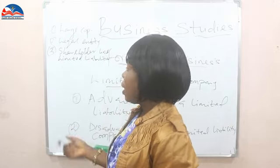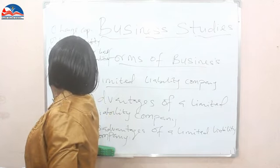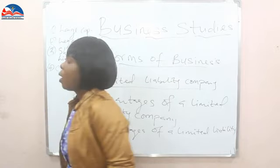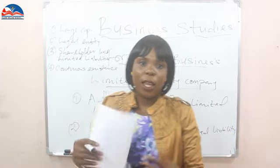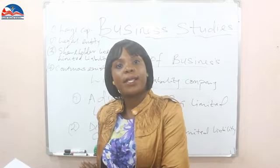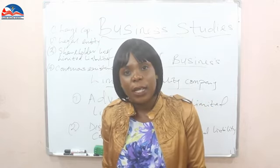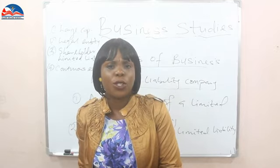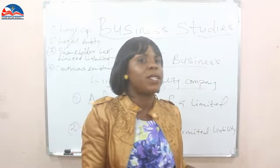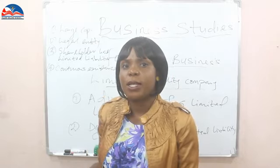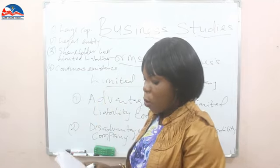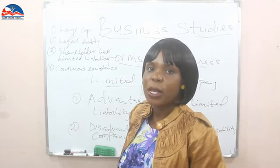Number four advantage: continuous existence. If one person dies or one person leaves the company, their share is transferred to another person or inherited by their children — it doesn't bring the business to an end. Unlike sole proprietorship or some partnerships, where if the owner dies the business dies, it is not like that for limited liability companies. The company continues to exist even when somebody leaves or dies. Continuity of existence is a key advantage.